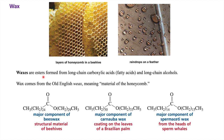Now we come to wax. Waxes are esters formed from long-chain carboxylic acids and long-chain alcohols. The word wax comes from the Old English word 'wēax' meaning material of the honeycomb. For example, beeswax has a fatty acid component with 26 carbons and an alcohol component with 30 carbons, forming an ester bond. Other examples are carnauba wax and spermaceti wax.